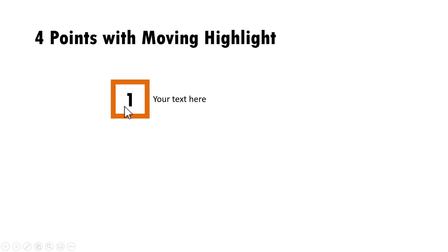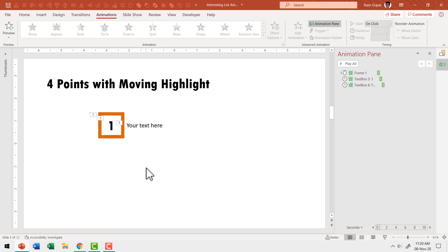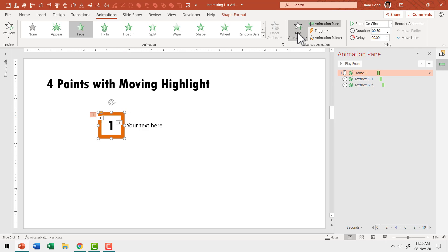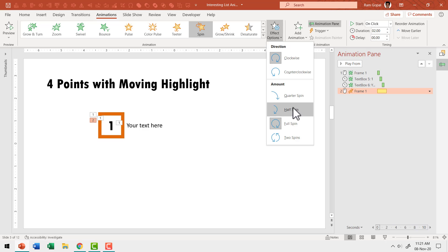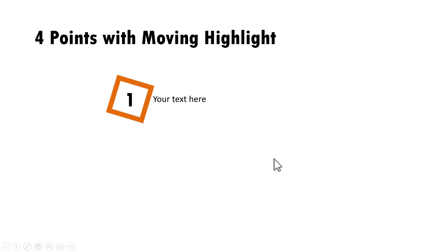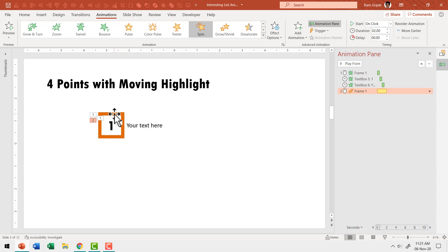A box appears on a click, a number appears after that, and then the associated explanation. Now we need to shift the viewer's attention from the first point to the second by having this frame spin. Let me see what happens if I apply a simple spin animation. Go to add animation, emphasis, spin, halfway through. On a click you can see the spin is not happening the way we want — the square frame is just spinning around number one. We want the frame to spin from this position to the next point's position. So how do we do that?